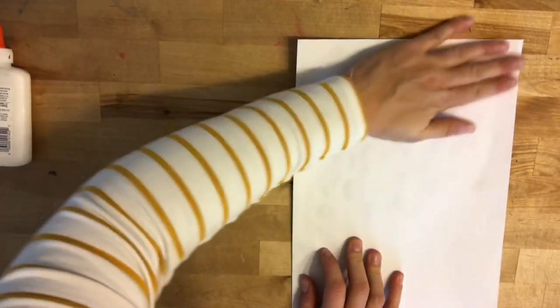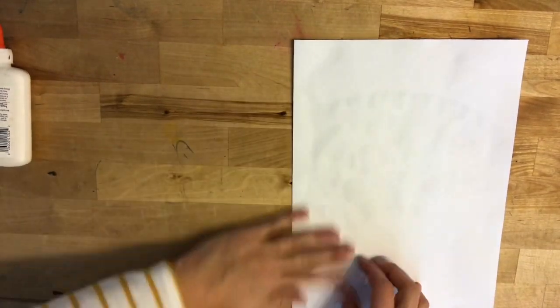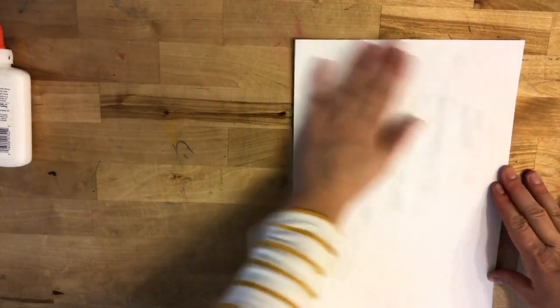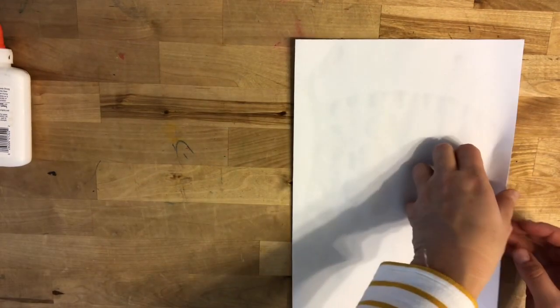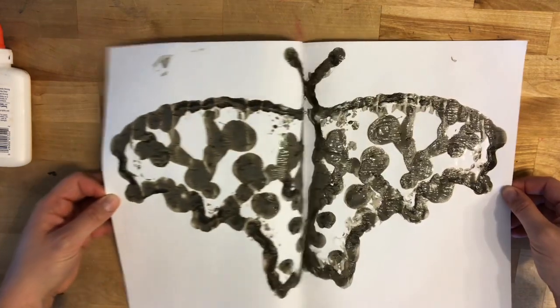I'm going to give this a little rub, nice and gentle. I don't have to push real hard, but I do want to go on my whole piece of paper just to make sure that both sides turn out exactly the same. And there I have my beautiful butterfly.